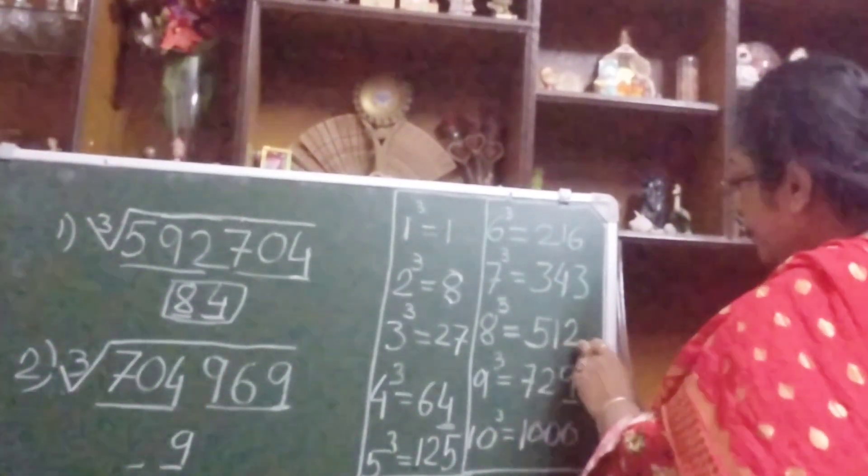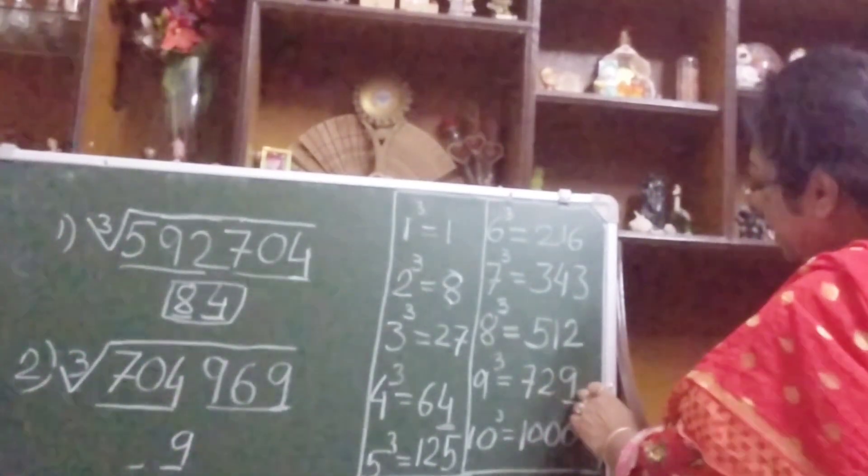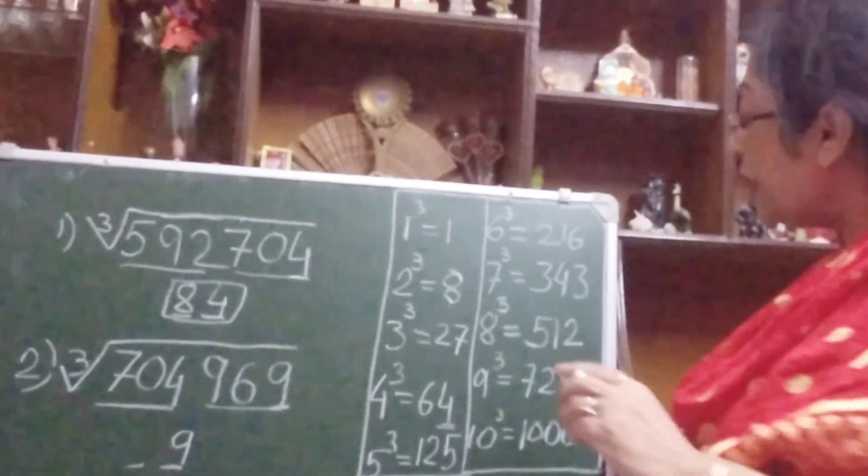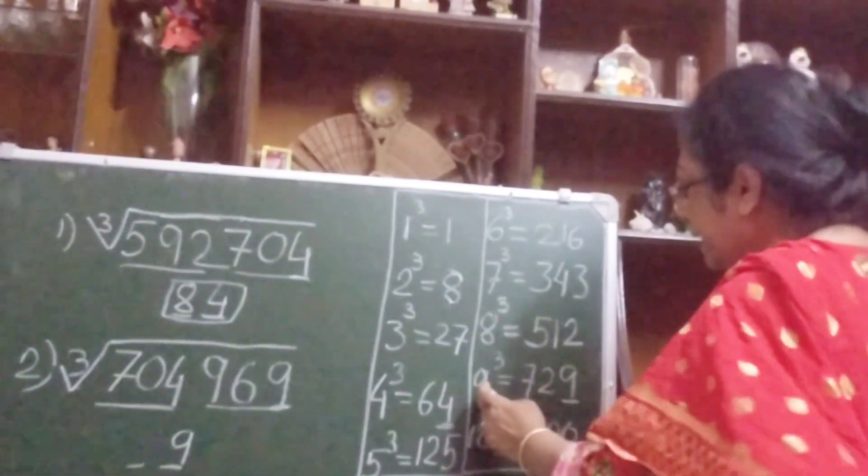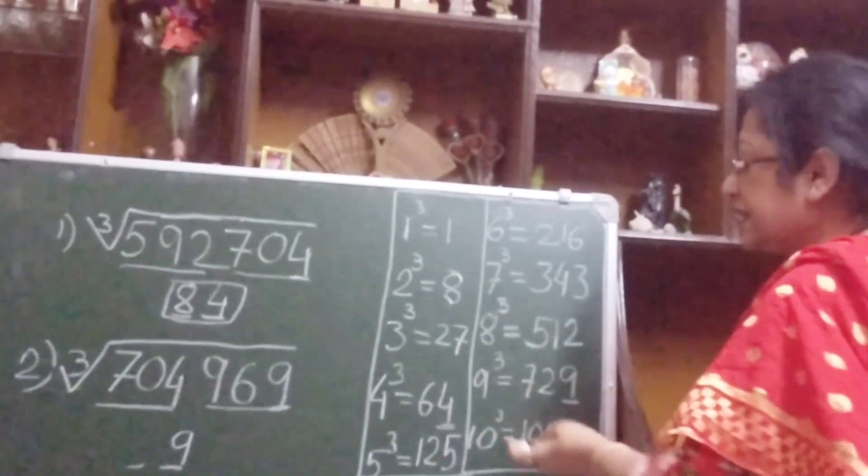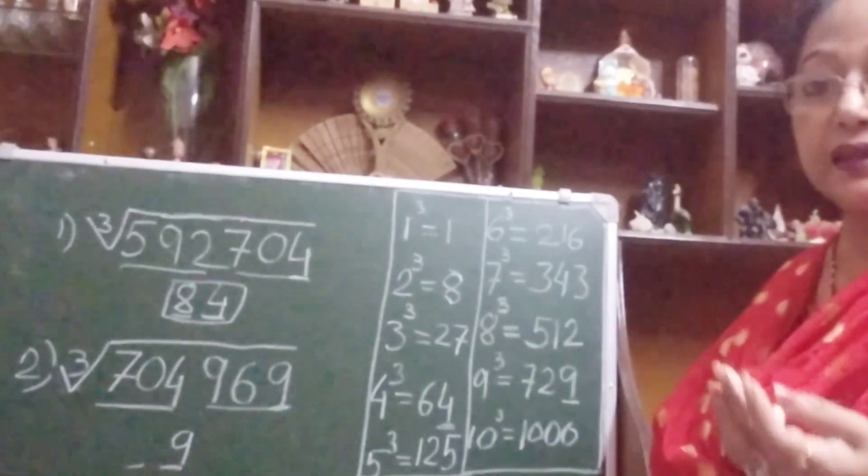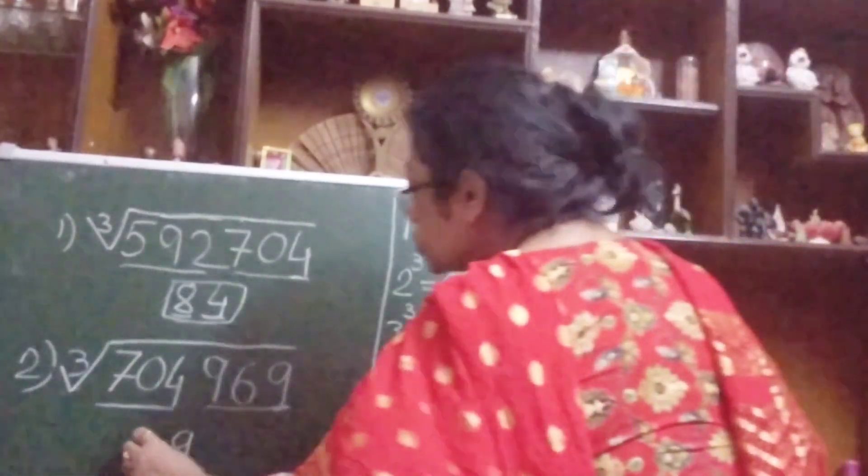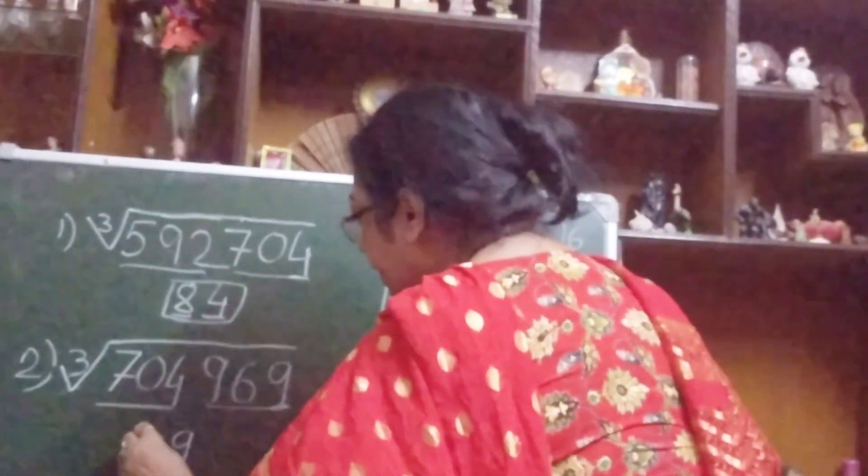See, 704 comes between 512 and 729. So see these are two digits, 8 and 9. So obviously what we will do, we will take the smaller one. So I have taken the smaller one, that is 8. So I have written here 8.